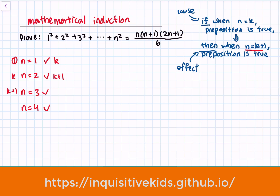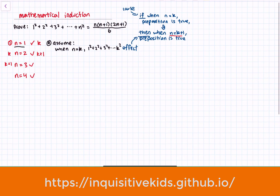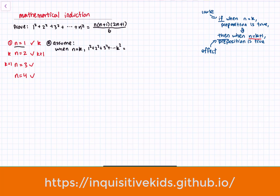Our next step: because we already proved that the first term, n equals 1, is true, we're going to assume that when n equals k — where k is any natural number — the equation 1 squared plus 2 squared plus 3 squared, all the way to k squared, is equal to k times (k+1) times (2k+1) over 6. We're going to assume this to be true.